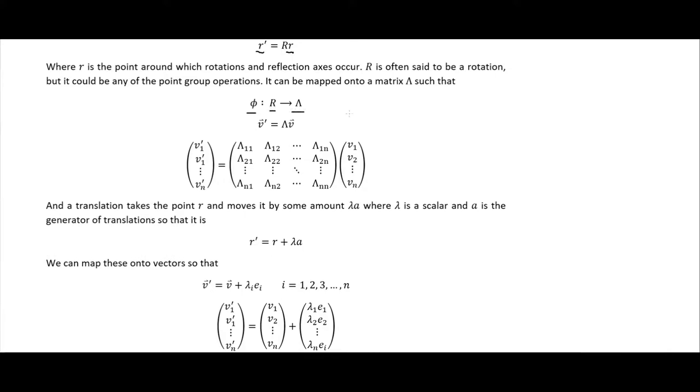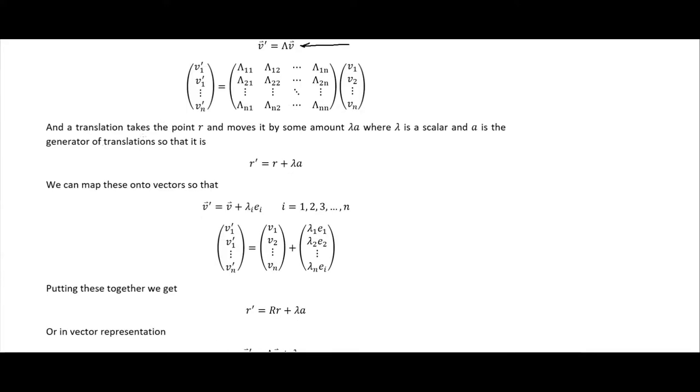Mapping to matrices changes it to look something like this. Adding a translation takes the point R and moves it by some amount lambda*A, where lambda is a scalar and A is the generator of the translation — essentially the basis vector of our lattice. The unit cell is the basis of the lattice, and A is the generator of the translations, so we have R prime equaling R plus lambda*A.